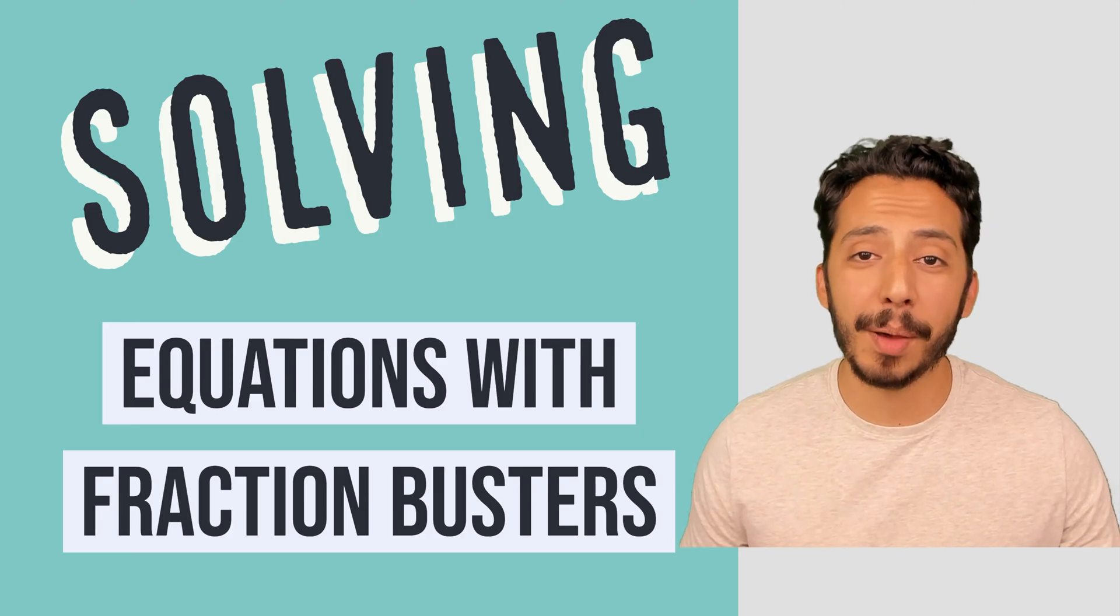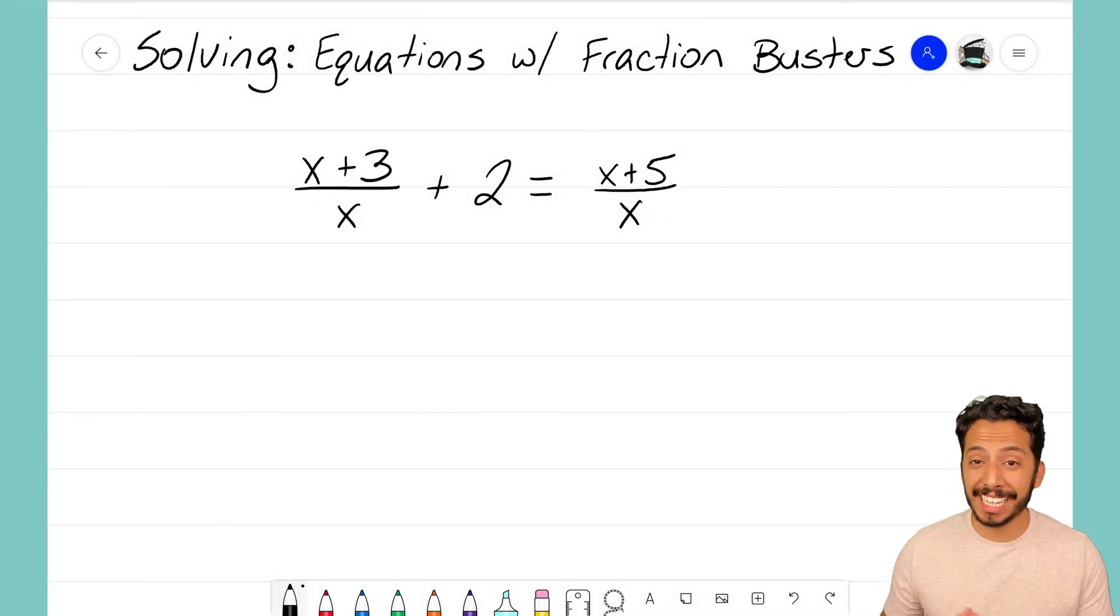We're going to jump right into an example problem here. It looks like we got a complicated equation but I think we can use fraction busters to make it much simpler. We have the equation (x + 3)/x + 2 = (x + 5)/x.